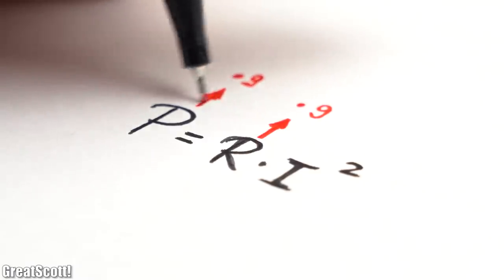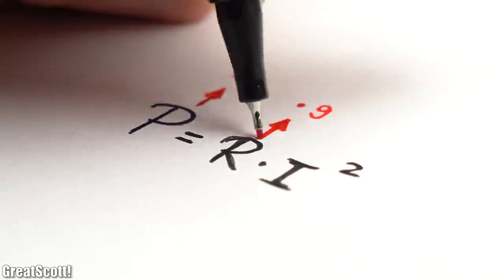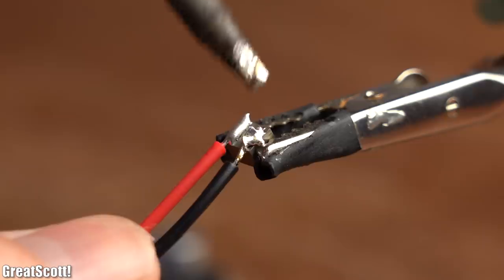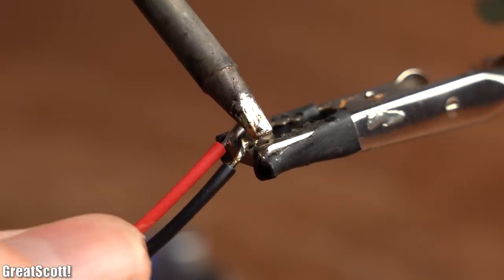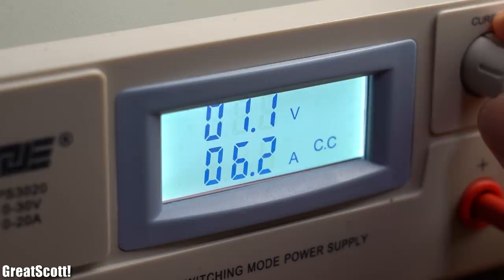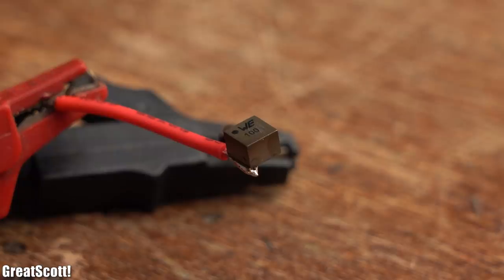And thus it produces nine times more power losses which need to get dissipated as heat. But because the smaller coil also features less surface area to dissipate the heat, we can easily slip into a region in which the winding isolation can melt and thus destroy the coil.